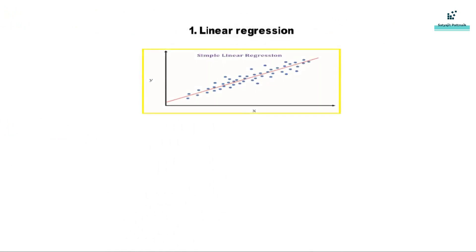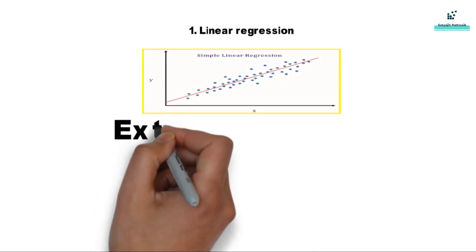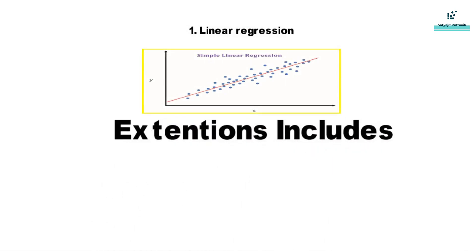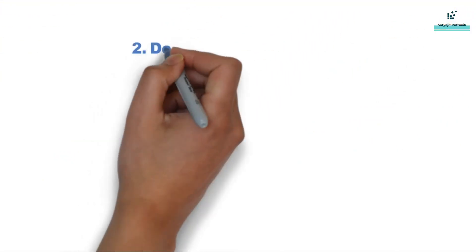Linear regression, which is simply finding a line that fits the data. Its extensions include multiple linear regression, that is finding a plane of best fit, and polynomial regression, that is finding a curve for best fit. Next is decision tree regression.